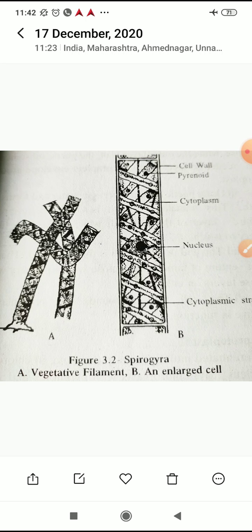Division Chlorophyta. Some of the reasons: it is grass-green in colour because of the presence of chlorophyll A, chlorophyll B, carotenoids, and xanthophylls. Pigments are localized in chloroplasts with pyrenoids. Starch is the reserved food. Therefore, division Chlorophyta.